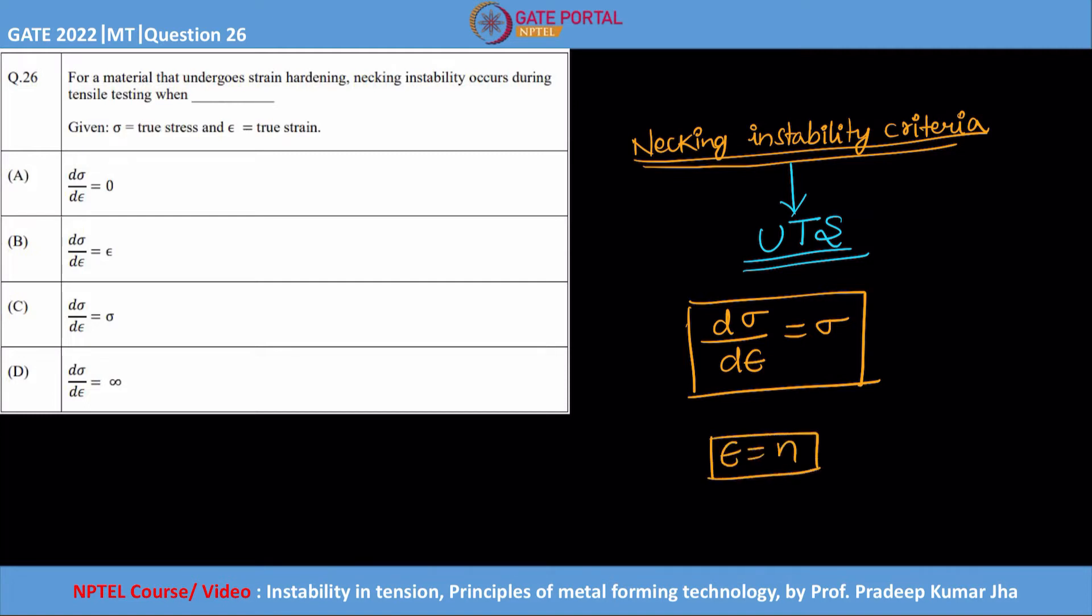it? So this is very easy. From the power law, σ is equal to k into ε power n. And from here, dσ/dε is equal to k into n into ε power n minus one. This is a simple differentiation, and this is again equal to σ from